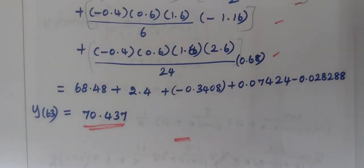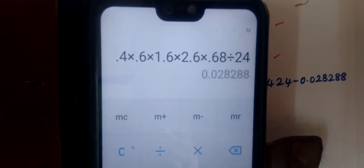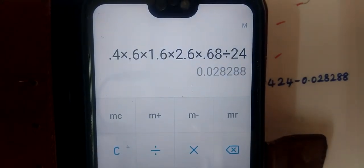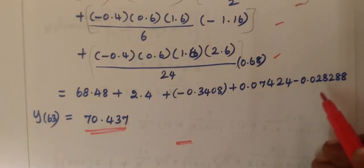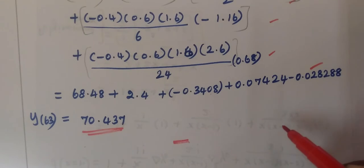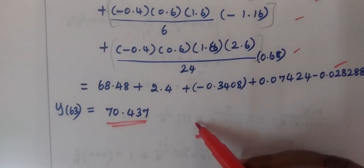This number is 0.02828. So this answer is 0.02. So the final answer for this is 70.437.